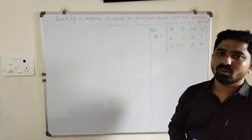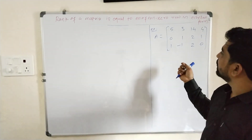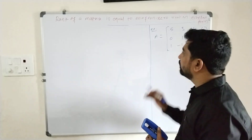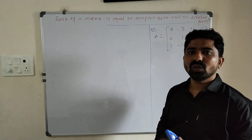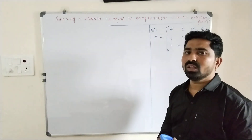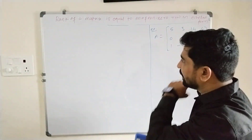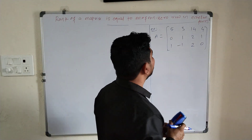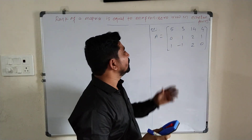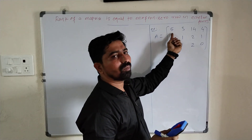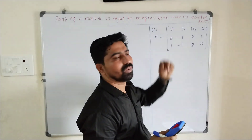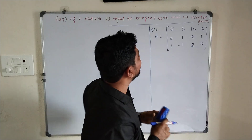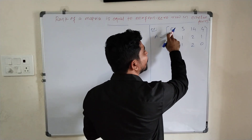But this matrix is not in Echelon form, so first we have to convert it into Echelon form using elementary row operations. Why is this matrix not in Echelon form? The first property says the first non-zero number from the left of a non-zero row should be 1. Here, in row R1, the first non-zero entry from the left is 5, not 1.